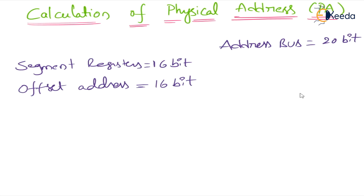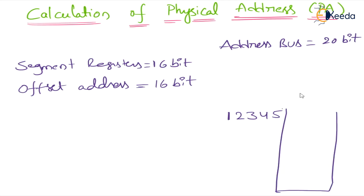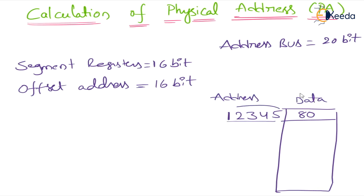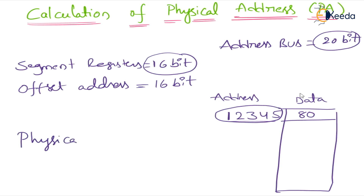The address bus size is 20 bit. Let us consider one address in hexadecimal: 12345. At that address the data is 80. I want this data from this address. The address bus size is 20 bit but our registers are having 16 bit. How can we access a 20-bit address by using 16 bit? That's why we should calculate the physical address — this is the main reason.